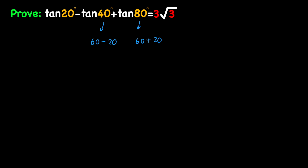The reason I chose 60 is because we know that tangent of 60 degrees equals square root of 3. So the left hand side equals tangent of 20 minus tangent of (60 minus 20) plus tangent of (60 plus 20). At this point we want to manipulate the left hand side to reach the right hand side and prove our equation.